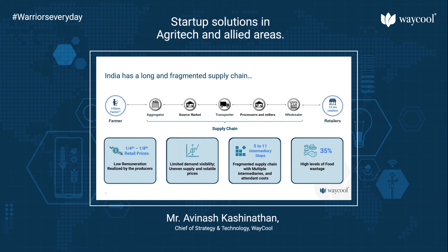This means that both at the farmer end as well as the retailer end, you have several millions of players in that ecosystem. Which means you need a set of aggregation at the farm end, because you cannot have one large truck from each farm — the harvest would not be enough to fill a 20-25 tonner vehicle; you will need multiple small vehicles. Similarly, at the retailer end, one truck is not going to service just one retailer — you have to service the needs of multiple smaller retailers.